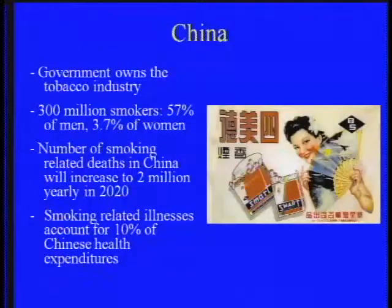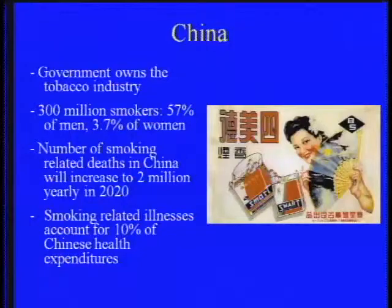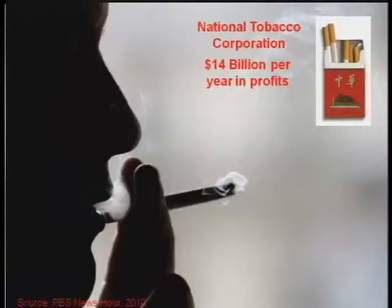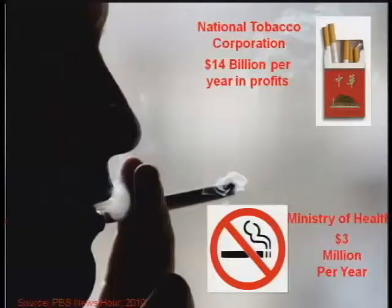In contrast, in China the government owns the tobacco industry. With 300 million smokers — 57% of men — China already has a very large number of smoking-related deaths, expected to increase to 2 million a year by 2020, with smoking-related illnesses accounting for 10% of Chinese health expenditures. The part of the government running the tobacco industry brings in $14 billion a year in profits, while the Ministry of Health receives $3 million a year for tobacco control — a more than 4,000-fold difference that is impossible to overcome.